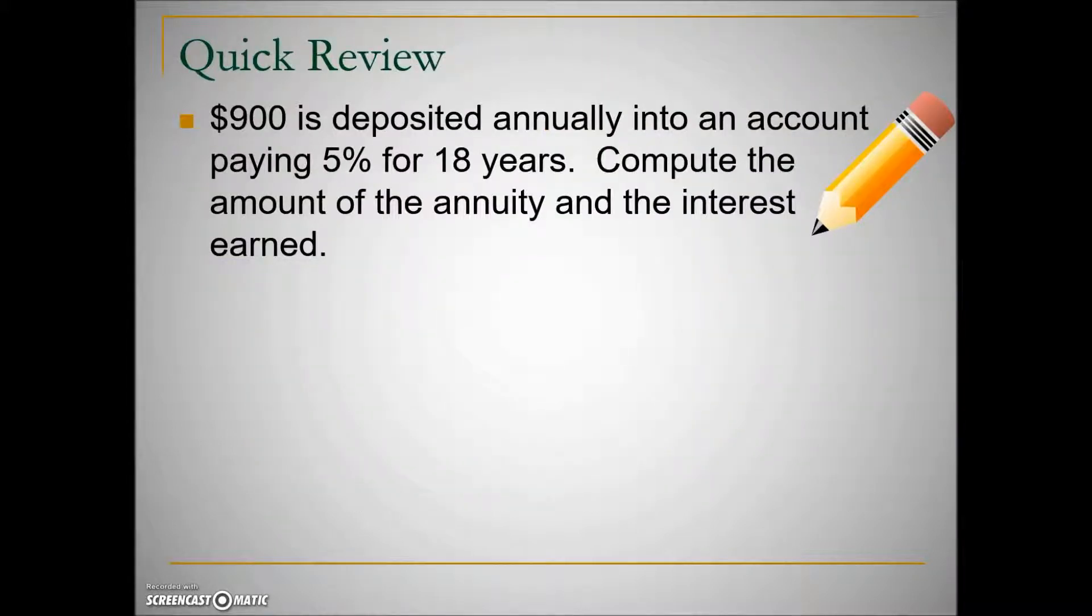Let's look at one more example. We're given that $900 is deposited annually into an account paying 5% for 18 years. Compute the amount of the annuity and the interest earned.